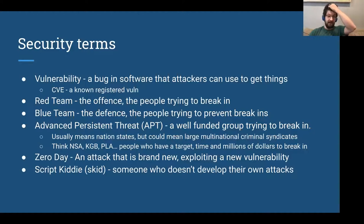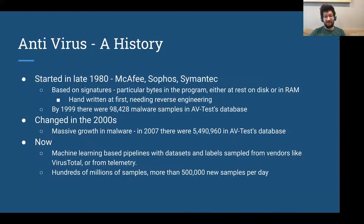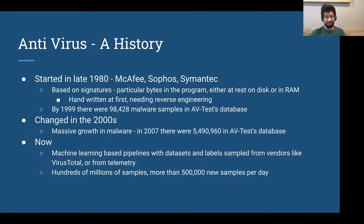I do machine learning blue team — blue team math in a sense. Antivirus has changed significantly. In the 1980s it was McAfee-style. In 1999 there were a hundred thousand known malicious samples. Seven years later, there were 5 million. Now I manage a database that has a severely downsampled count of 150-ish million. We get millions of samples a day and select the ones we want from that — more than 500 new samples per day by certain counts. That's a lot of malware.